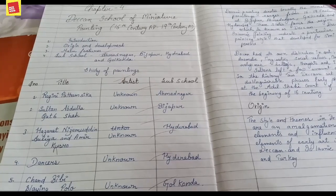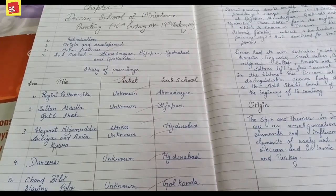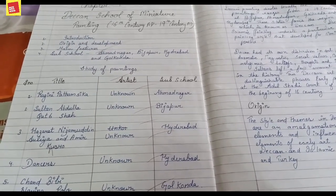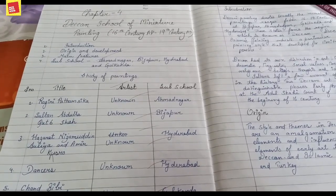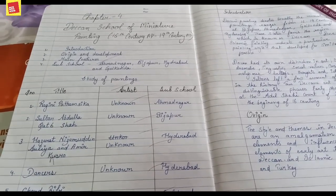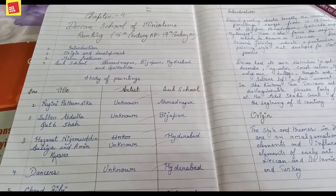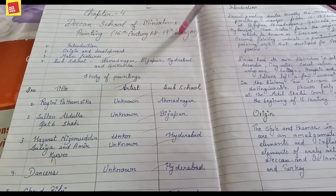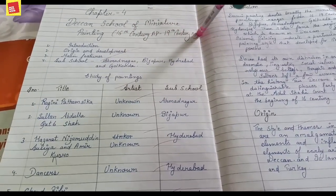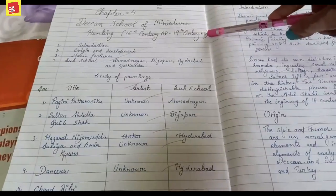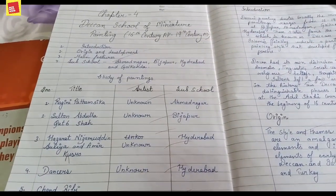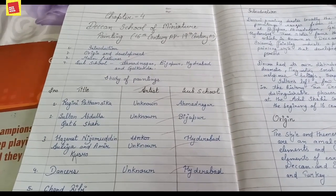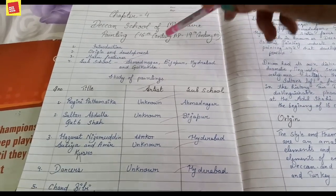Welcome to Arts with Aisha. Today we are going to start the Deccan School of Miniature Painting, which spans from the 16th century AD to the 19th century AD. We will cover the last three chapters in this unit, including the introduction, origin and development.